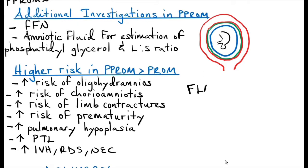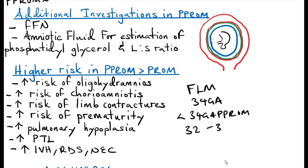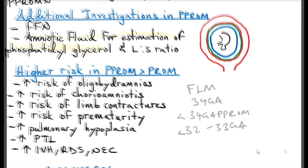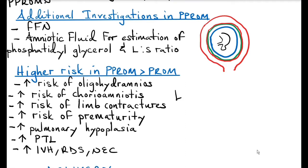Fetal lung maturity is complete by 34 weeks gestational age. But if a patient comes to you before 34 weeks, say 32 to 33 weeks gestational age, you suspect fetal lung maturity has not yet been completed. To confirm, you collect amniotic fluid for estimation of phosphatidylglycerol, a glycerophospholipid found in the pulmonary surfactant of the fetus. If phosphatidylglycerol is present, it indicates fetal lung maturity. Another way to confirm is to do a lecithin-to-sphingomyelin ratio.